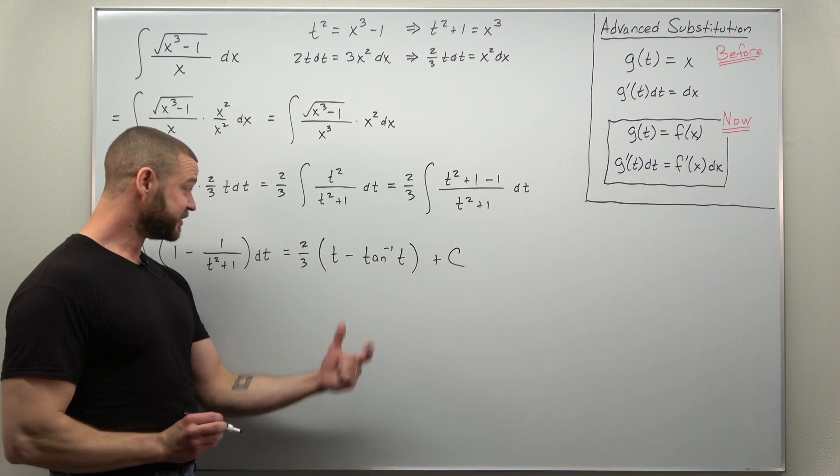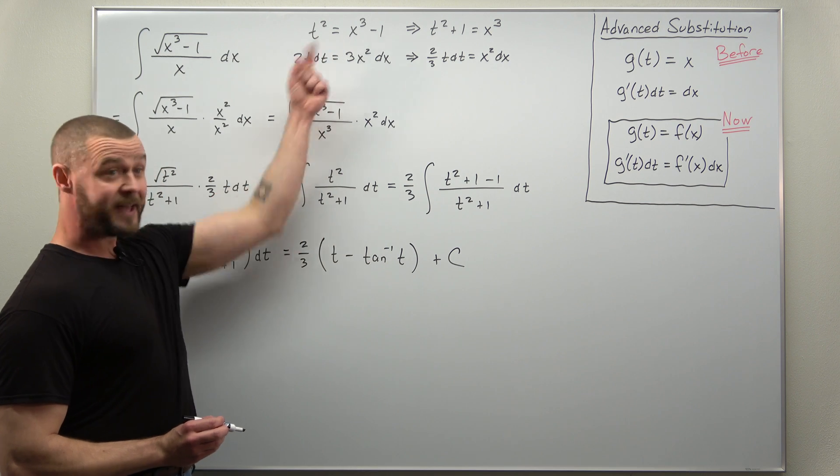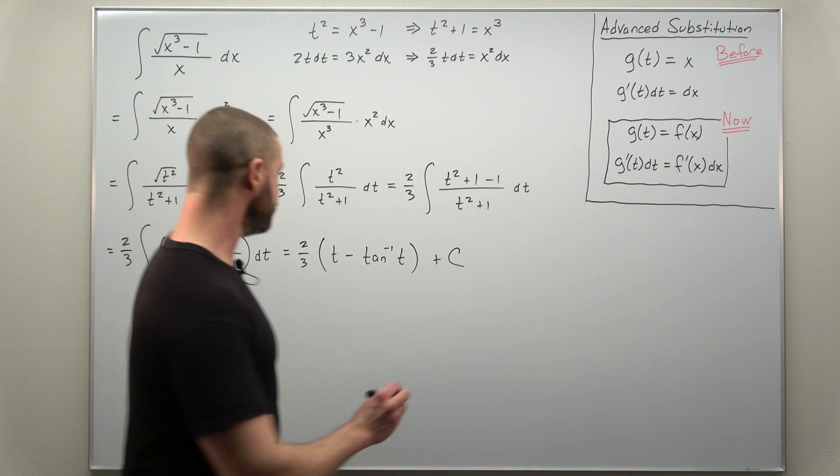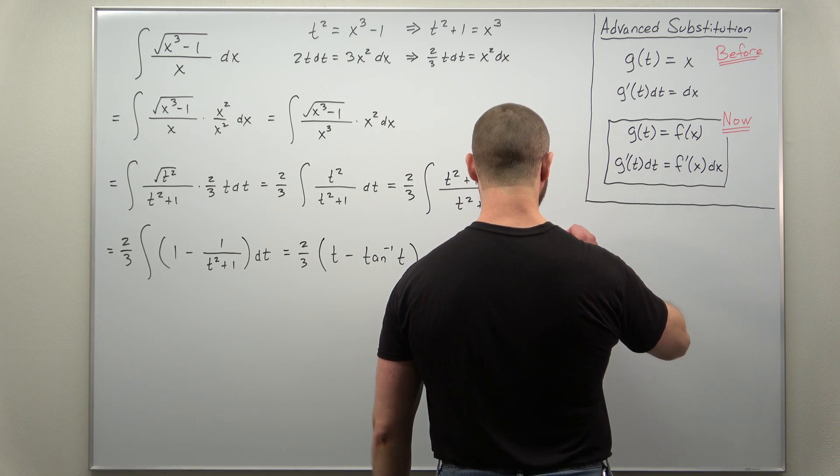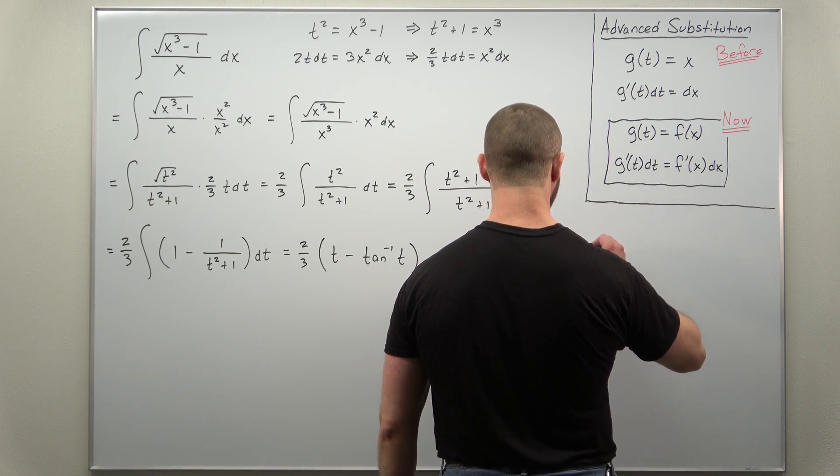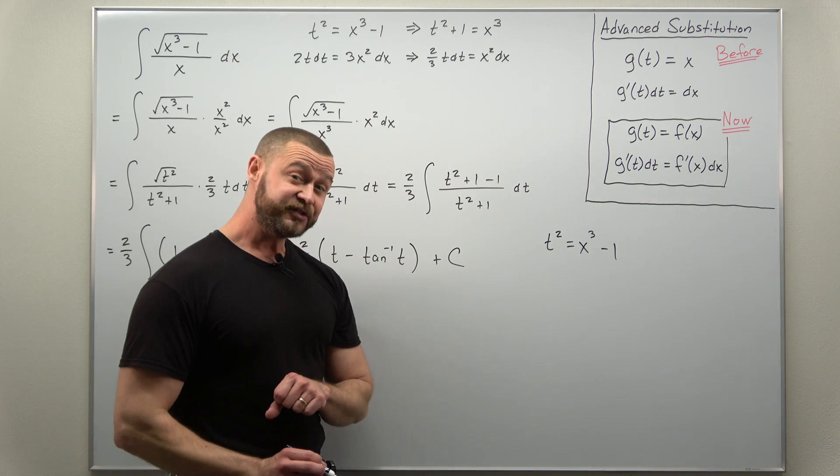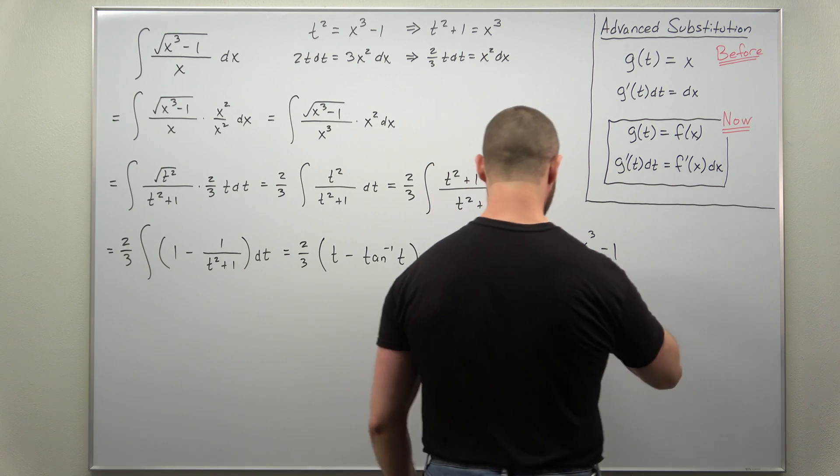The only work left is converting from t back to x, your original variable for your integral. And we can do that with our substitution which was t squared equals x cubed minus 1. And we can solve that for t by taking a square root of each side.